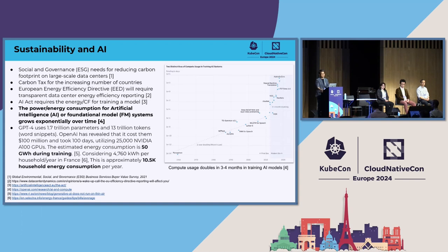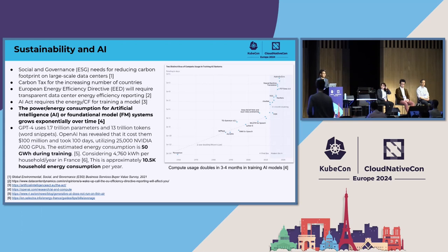This is some ballpark numbers based on reports. Calculated from average household energy consumption per year, training a GPT-4 model takes approximately 10,500 household-years of energy — which is a lot for training one model. As a disclaimer, that is an estimated number, not an actual verified number.